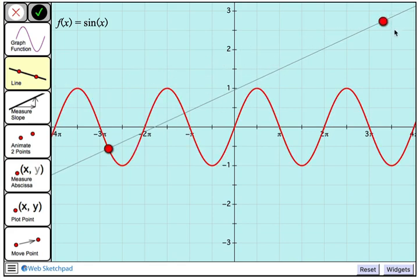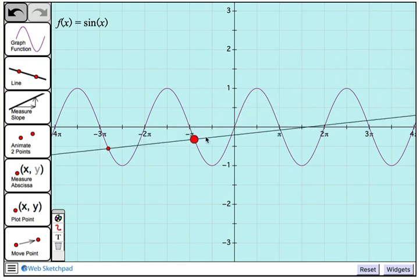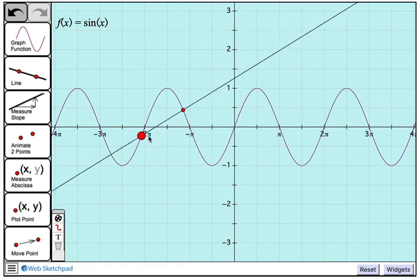Now the other point that defines the line is glowing, and let's attach that to the graph as well. Now both of these points, when we drag them, move along the function. So we have ourselves a secant line.